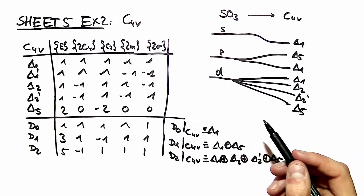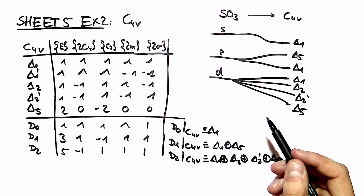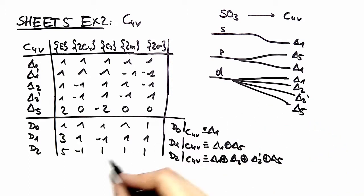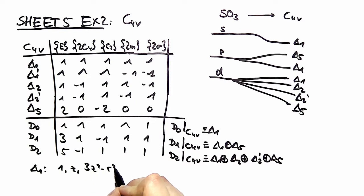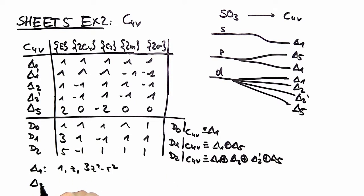Now we look at the symmetry adapted wave functions. Here, as I mentioned before, things are a lot easier. In delta 1, 1z and 3z squared minus r squared live. In delta 2, you can see that when you project x squared minus y squared into this irreducible representation, you end up having the same polynomial.